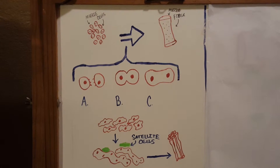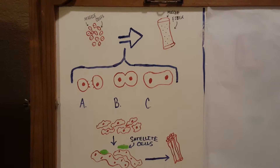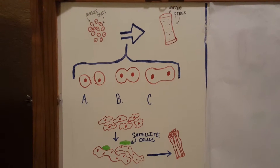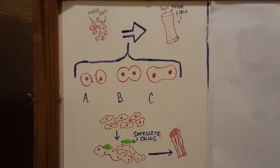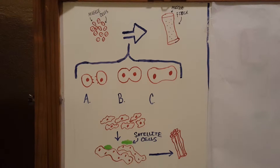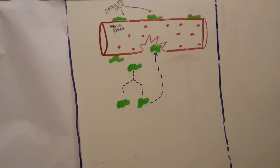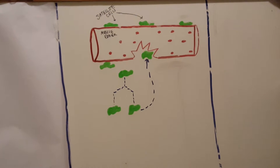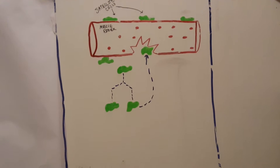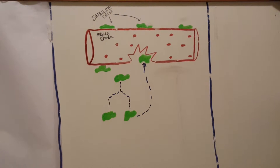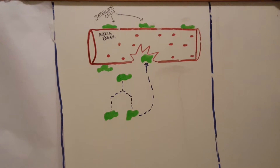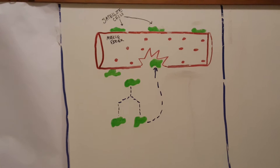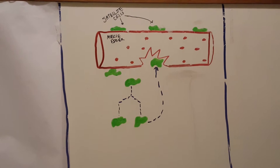Well, how can a muscle fiber grow and repair itself then? Good question! Muscle fibers have satellite cells. Satellite cells are myoblasts that never fuse into muscle fibers during development. Therefore, they can undergo mitosis and fuse into a tear in the fiber.